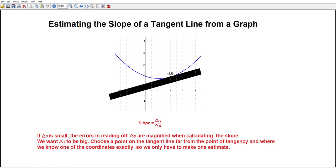And the reason is, if delta x is small, the errors we're going to get in reading off delta y will be magnified when we divide delta y by delta x.